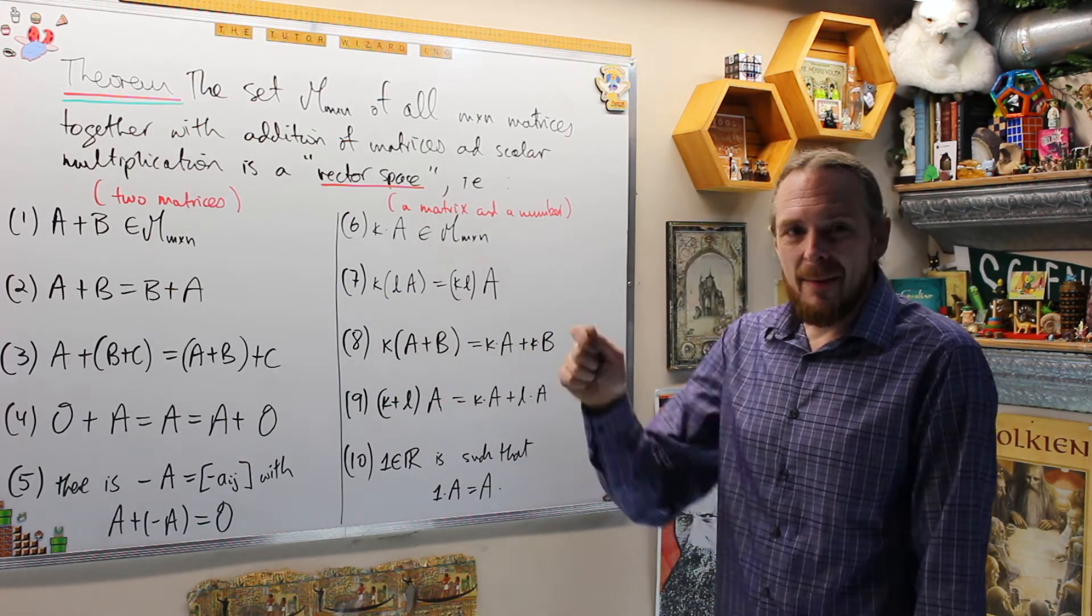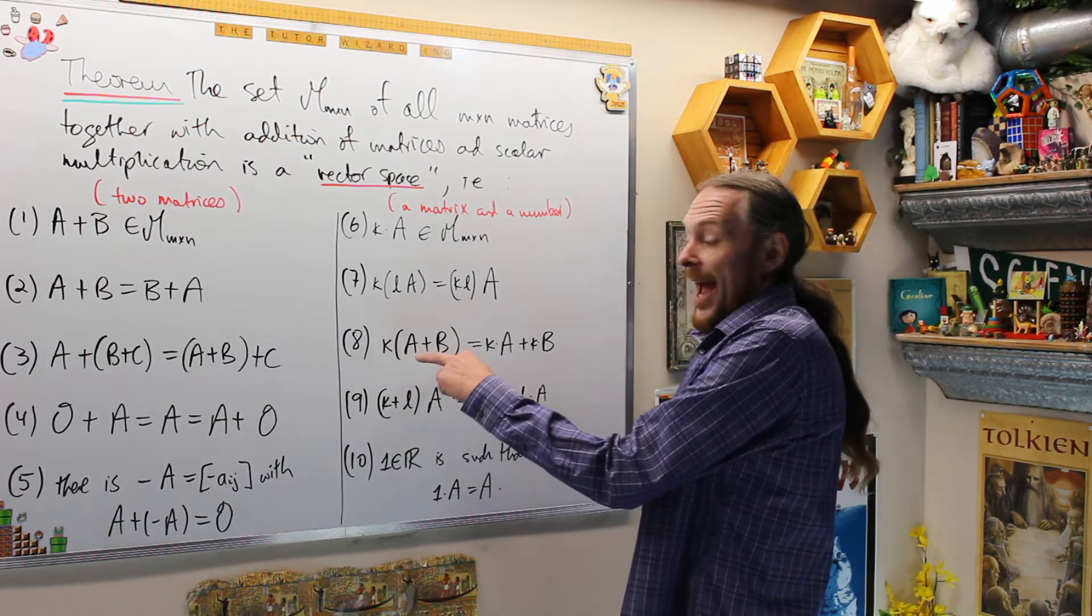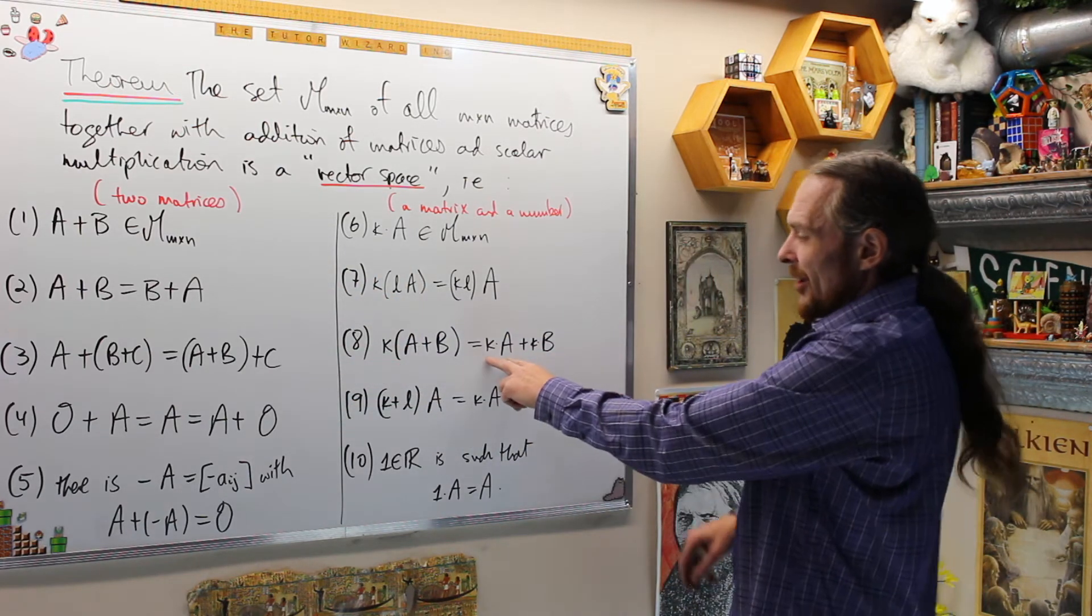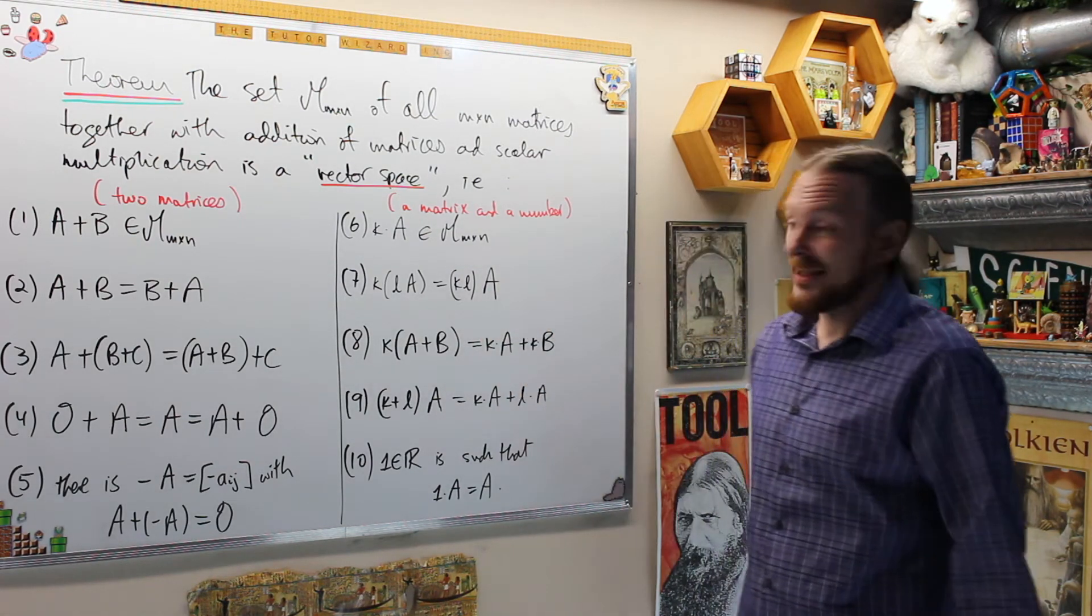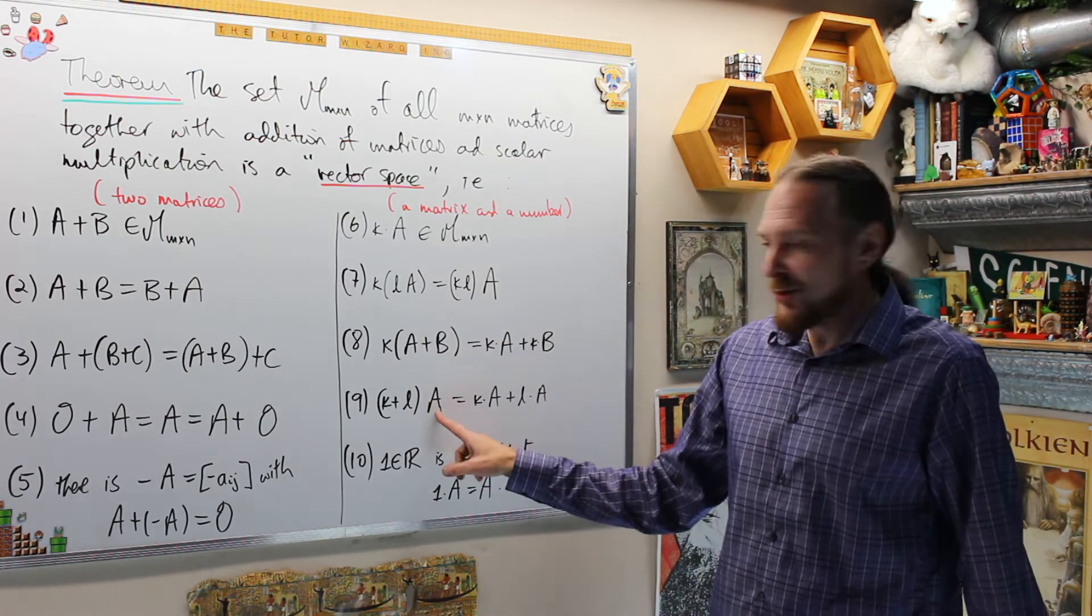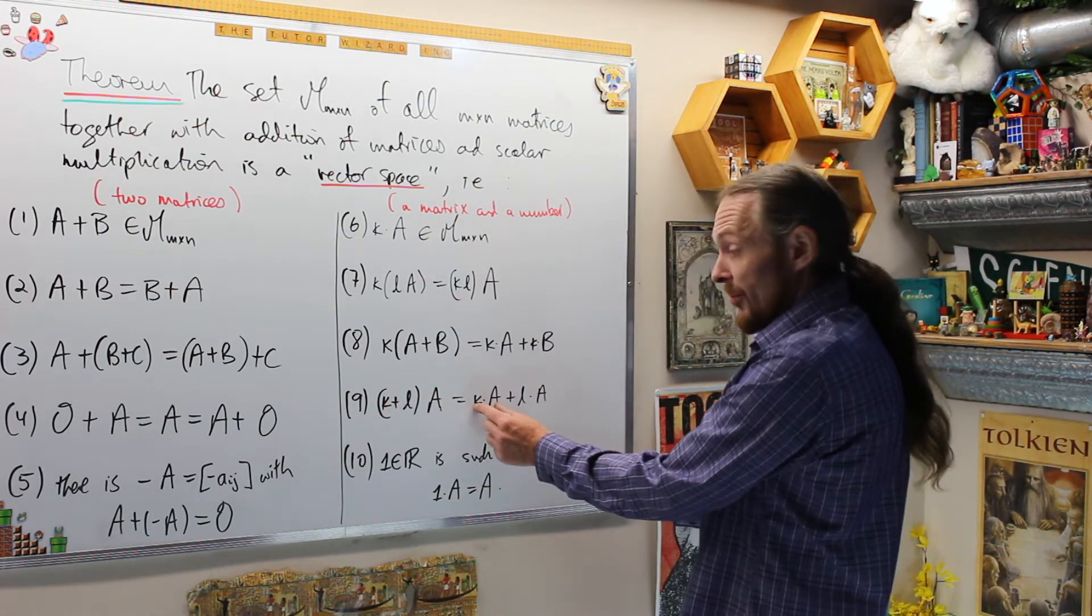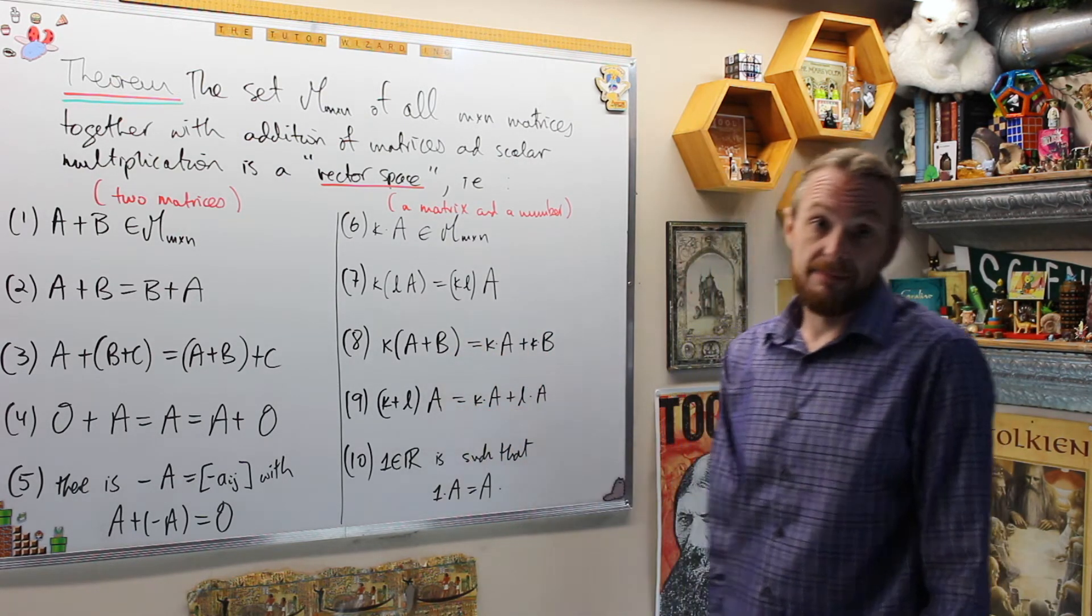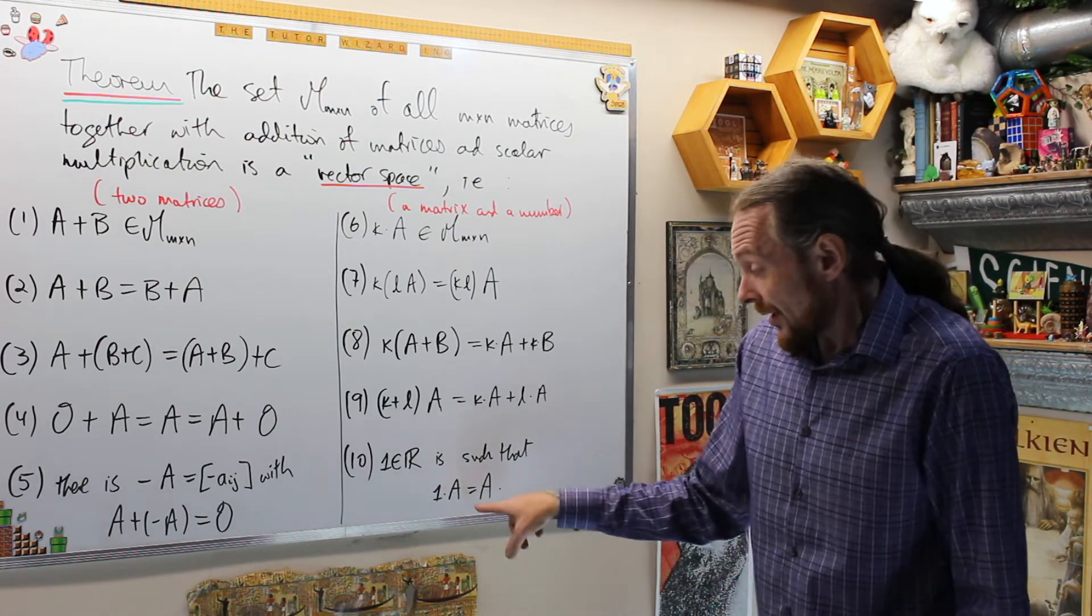What 8 says is you can distribute a number onto the sum of two matrices. So what the left-hand side says is you could add the matrices first with our definition and then scalar multiply it. Or the right-hand says you could scalar multiply A by K, you could scalar multiply B by K, and then add those two matrices. And that's saying that's the same. I know there's a whole lot more there than you think. This one's saying the reverse. You can distribute a matrix onto two numbers. Here you could add the numbers and let scalar multiply, or you could scalar multiply A by K, scalar multiply A by L, then add those two matrices. You get the same outcome. Distributive properties. And this is the scalar identity. One leaves all the matrices alone.